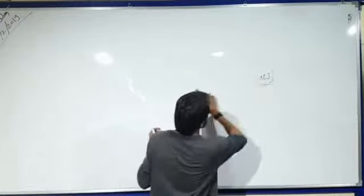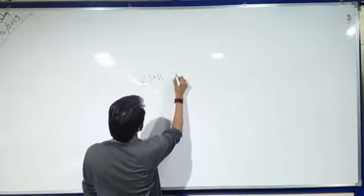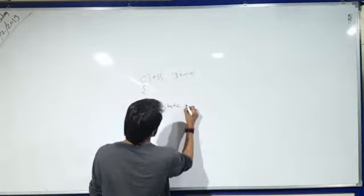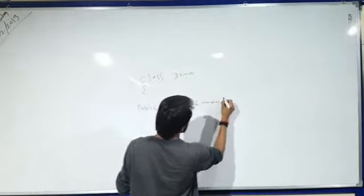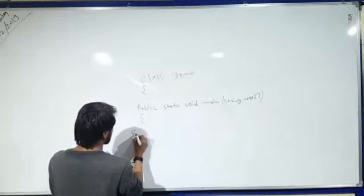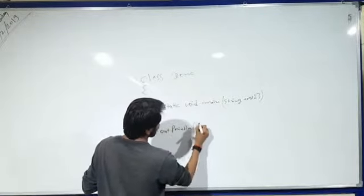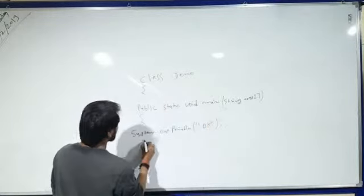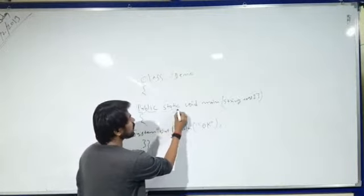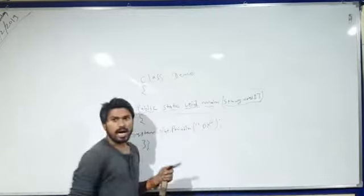So let me write an example here. This is a public static void main method. And here I want to print something — like System.out.println — and I want to print 'ok' on the console. So this is a simple example in Java. I have told you about what is the meaning of static, why main, and also the command line argument.